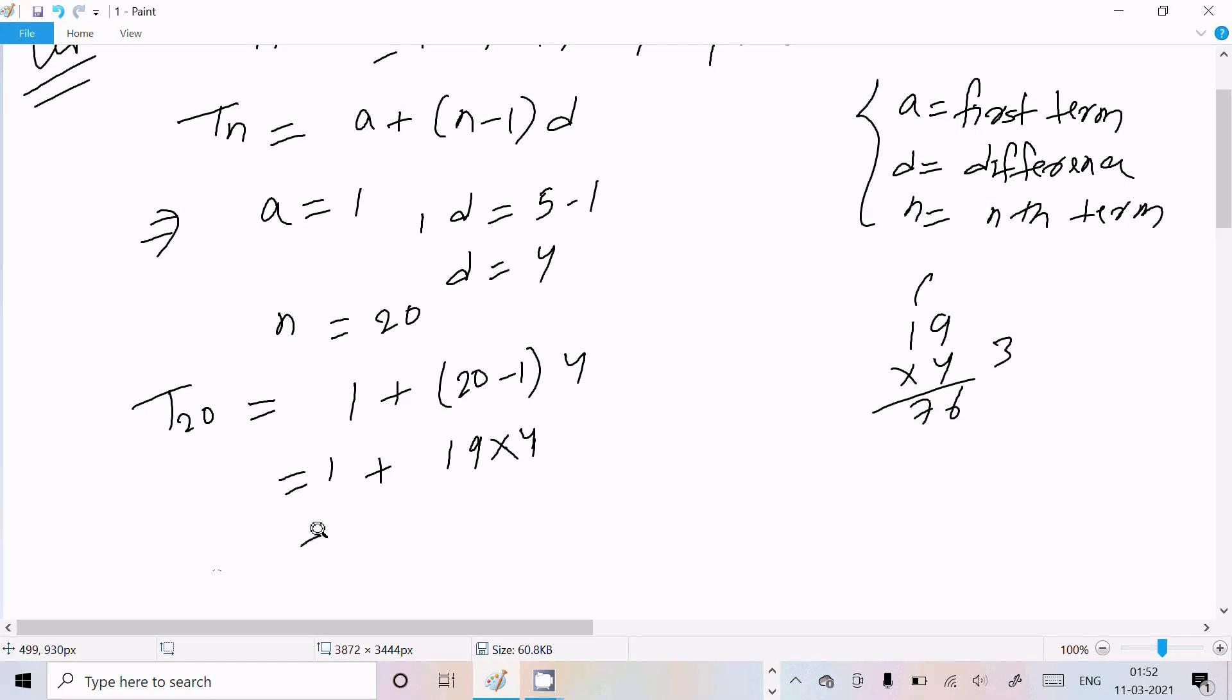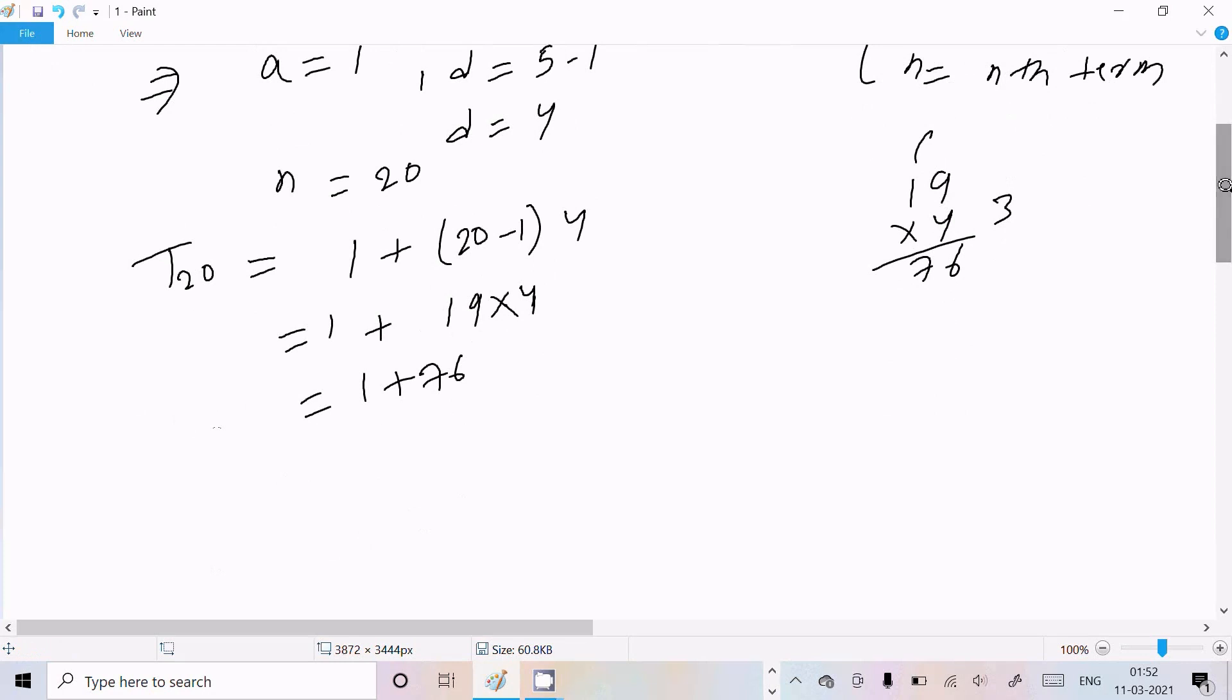So 19 into 4 is 76, so 1 plus 76, the 20th term comes 77. So T20 equals 77.